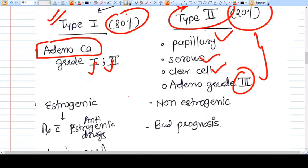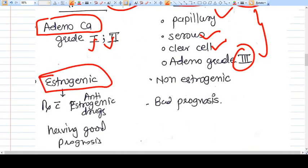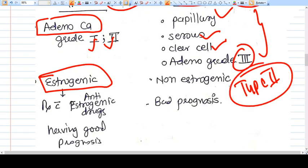Why is it a good prognosis? Because Type 1 is dependent on the estrogenic exposure. So when there is a higher estrogen exposure, then the development of adenocarcinoma Type 1 possibility is good.